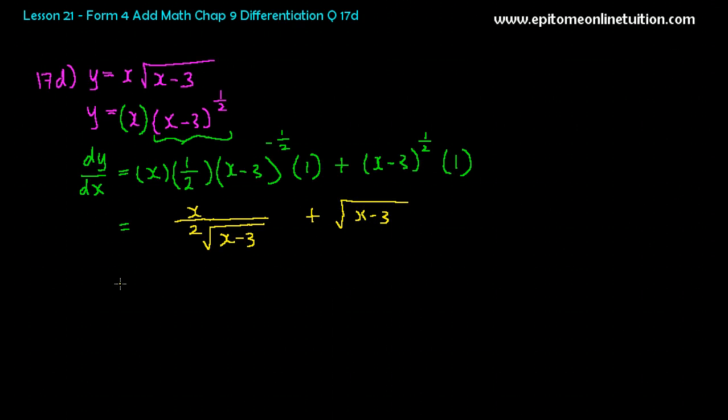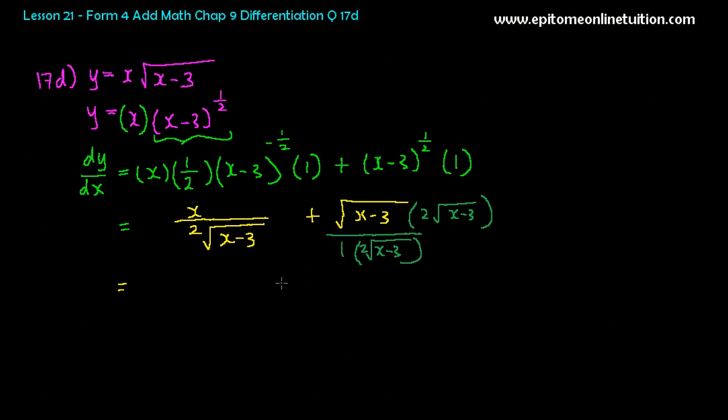Then plus, this is times 1. So this is the root of x minus 3. So now it's so much simpler. Okay, you cannot leave your answer like this. There are two terms. You have to combine the two terms. It means you have to do the fraction. So this you do over... this is an over 1. So you multiply it with 2 square root x minus 3.